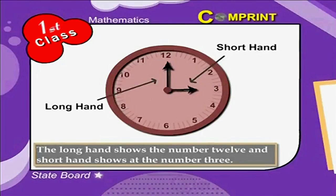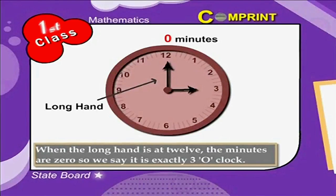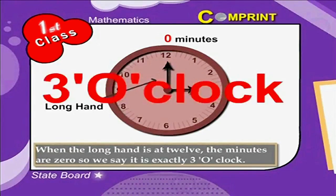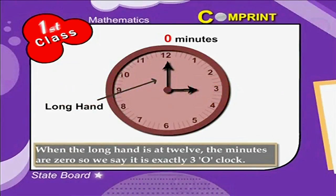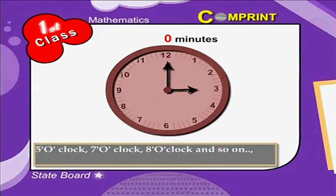The long hand shows the number 12 and the short hand shows the number 3. When the long hand is at 12, the minutes are 0. So, we say it is exactly 3 o'clock.